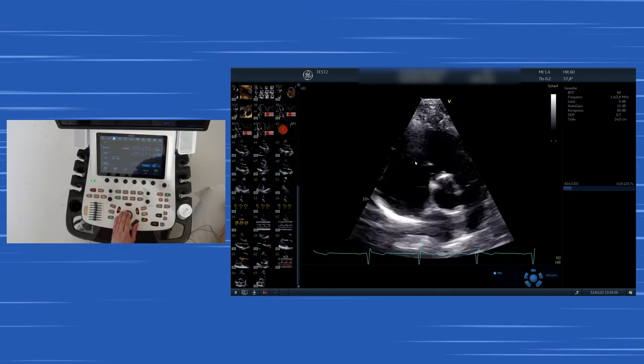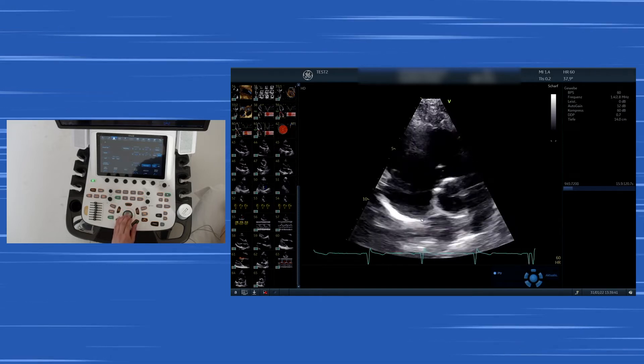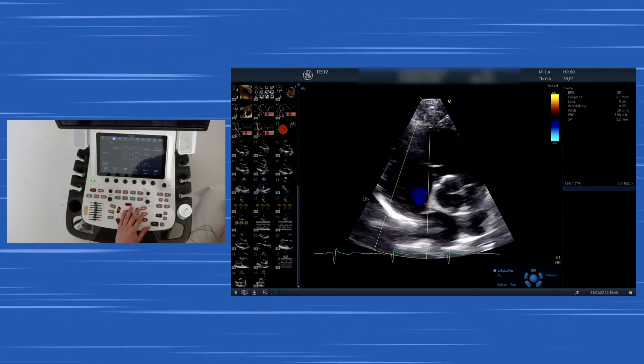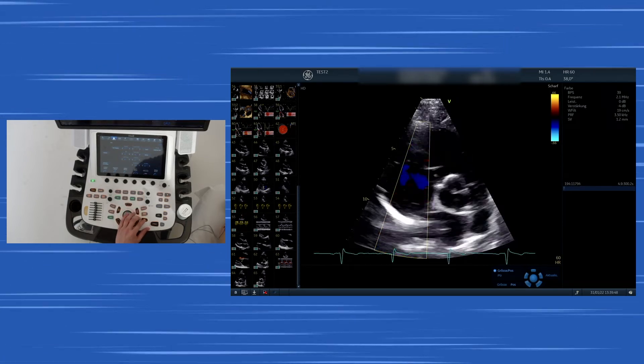Here you see the RVOT and here the tricuspid valve, the interatrial septum. And also add the color Doppler to the tricuspid valve to see if there is regurgitation present.